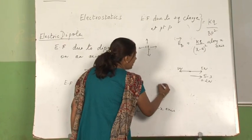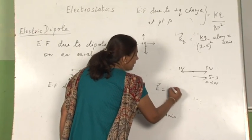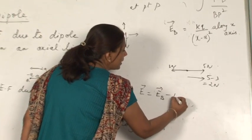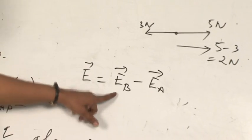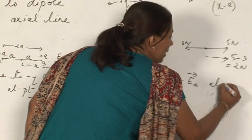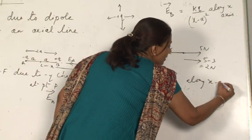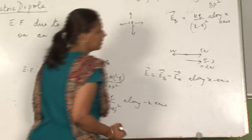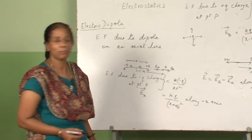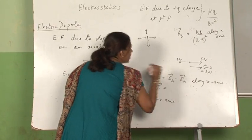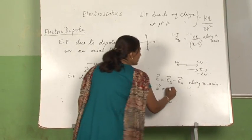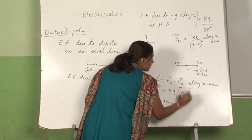So the net electric field due to the dipole will be equal to E_B minus E_A, and the direction will be in the direction of E_B, which is along the x-axis. Now we will substitute and solve further. E_B has kq, so I can write it directly.